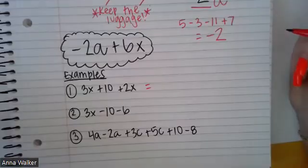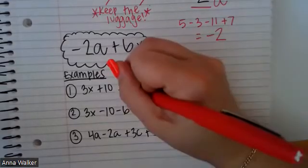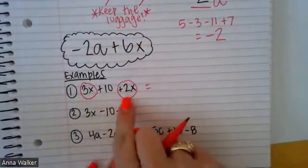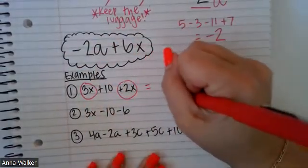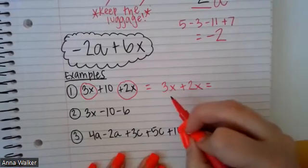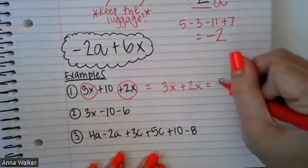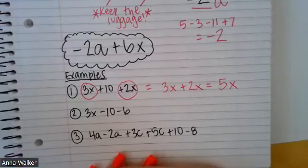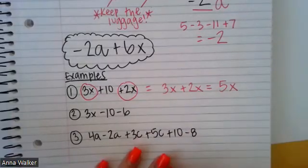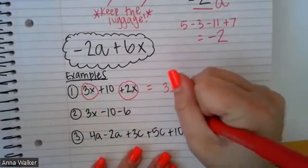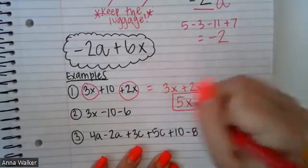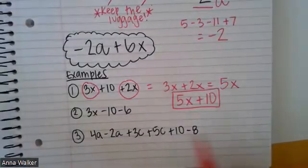Let's look at the first one. We have 3X plus 10 plus 2X. My like terms are 3X and 2X. I'm going to keep the luggage of signs, so this is 3X plus 2X. If I have 3Xs plus 2Xs, 3 plus 2 means I have 5Xs. So if I combine those like terms, that's 5X. There's no other thing that we could simplify that with, so the simplified expression is going to be 5X plus 10, or I could put 10 plus 5X.